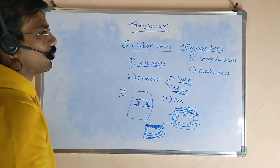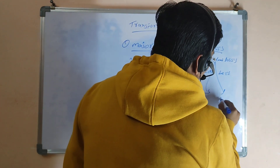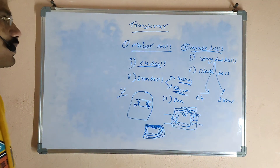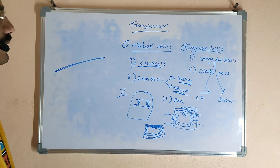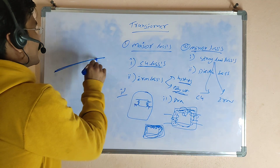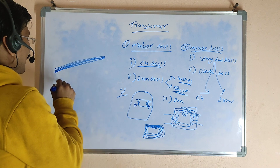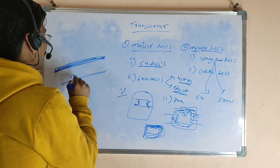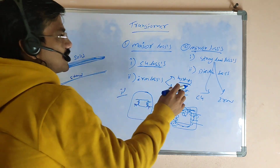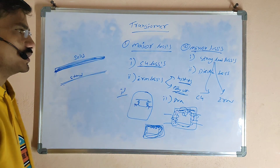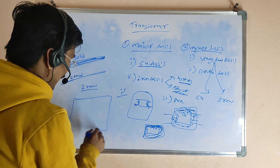For the minor losses, the stray load losses can be classified into two types: copper stray load losses and iron stray load losses. The copper stray load losses can be reduced by using stranded conductors instead of solid conductors. Using stranded conductors in place of solid conductors reduces the copper stray load losses.